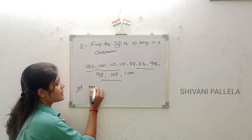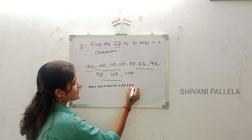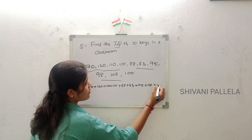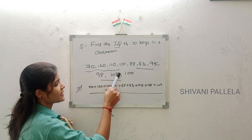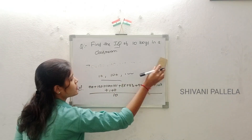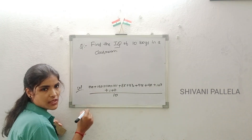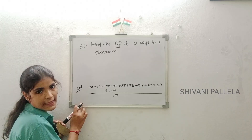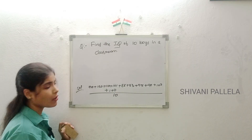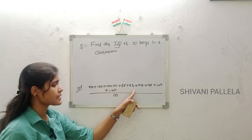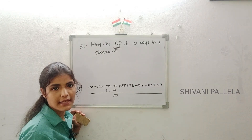Sum of observations: 70 + 120 + 110 + 101 + 88 + 83 + 95 + 98 + 107 + 100, divided by number of observations which is 10. You need to convert the question into a formula — sum of observations by number of observations. Use a calculator; you are allowed to take a calculator into the examination hall.